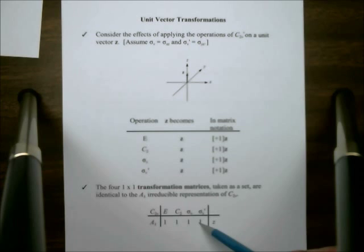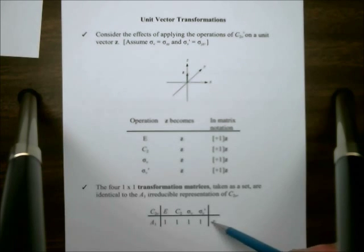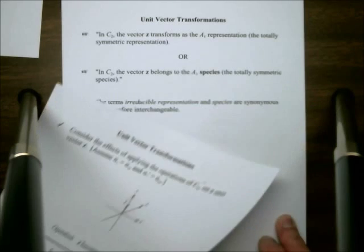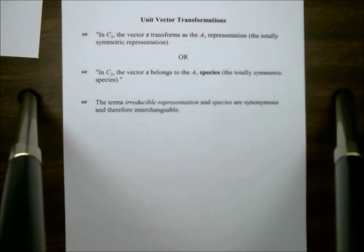By what we've already seen, that representation is A1. So we could make a notation out here in our character table of a unit vector z as an indication that z transforms as A1 in C2v. So what we say is that in C2v, the vector z transforms as the A1 representation, the totally symmetric representation.